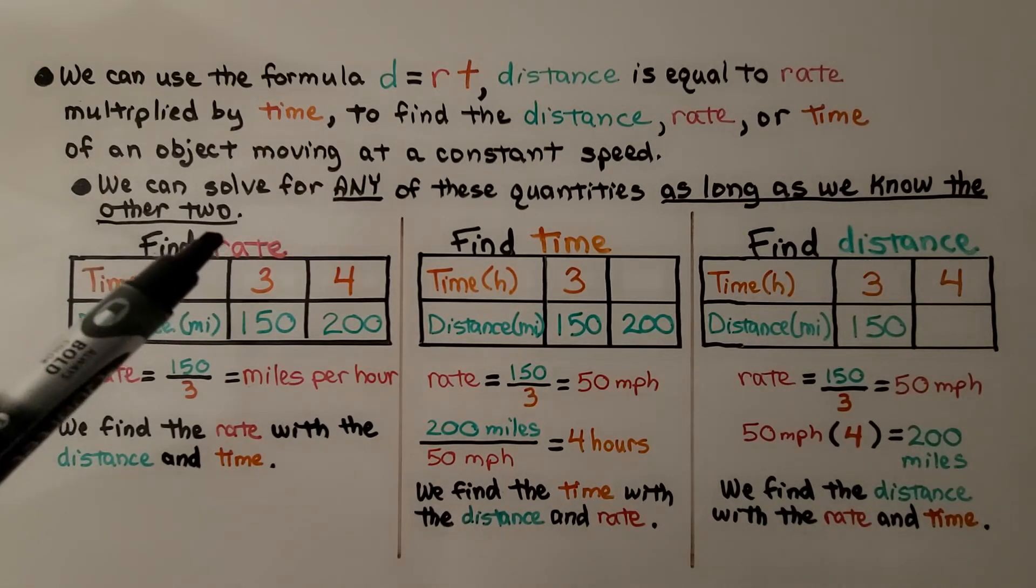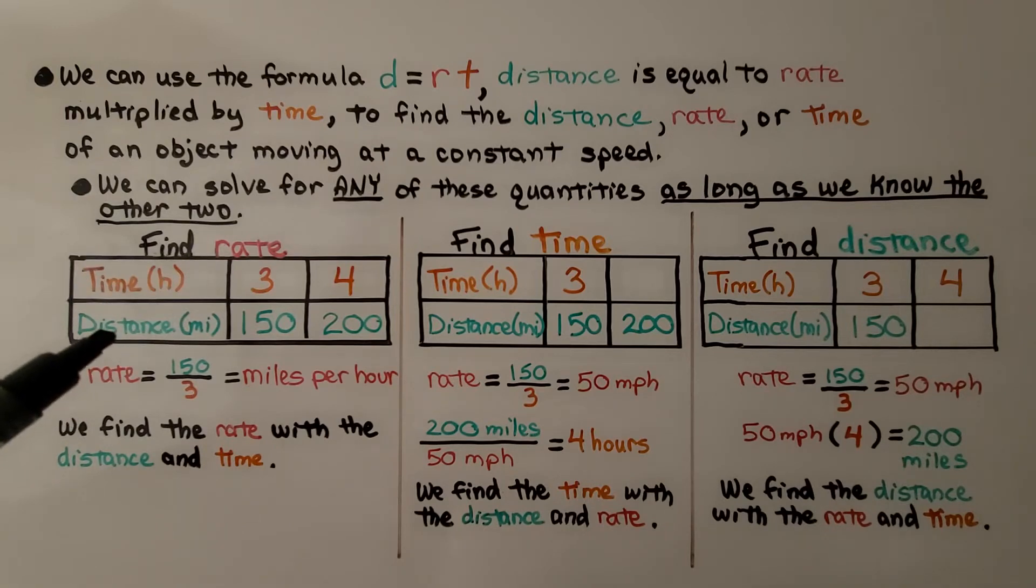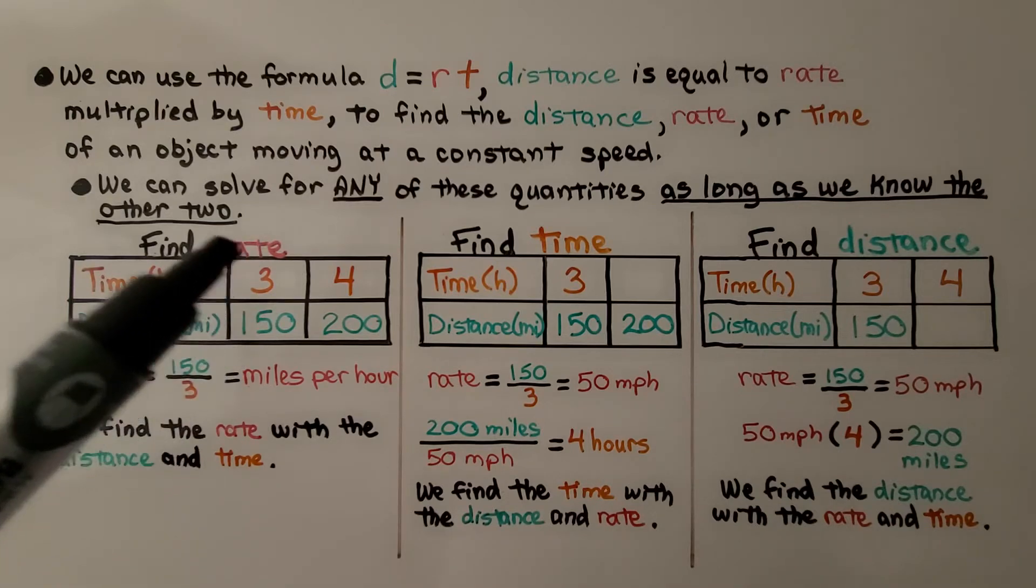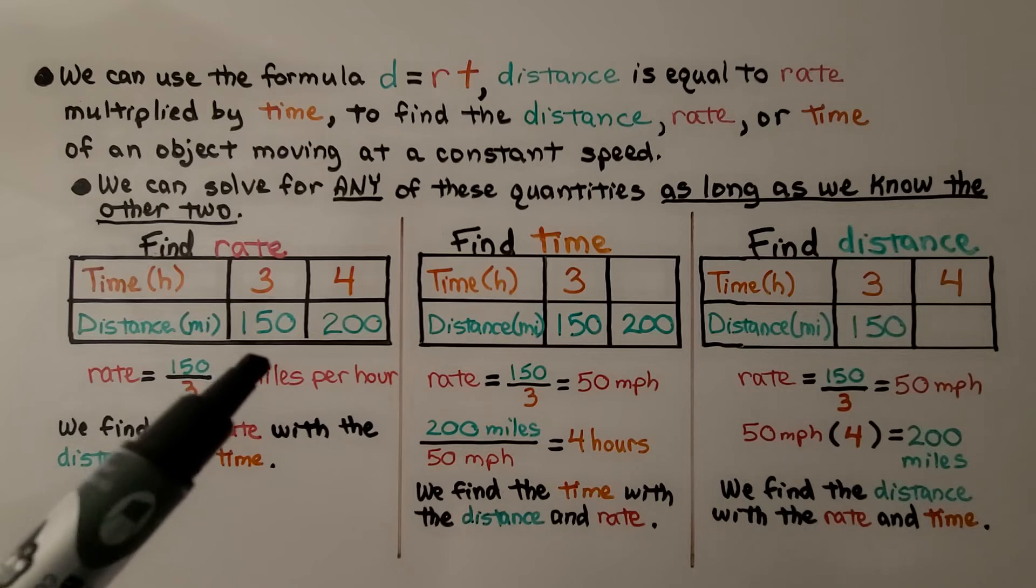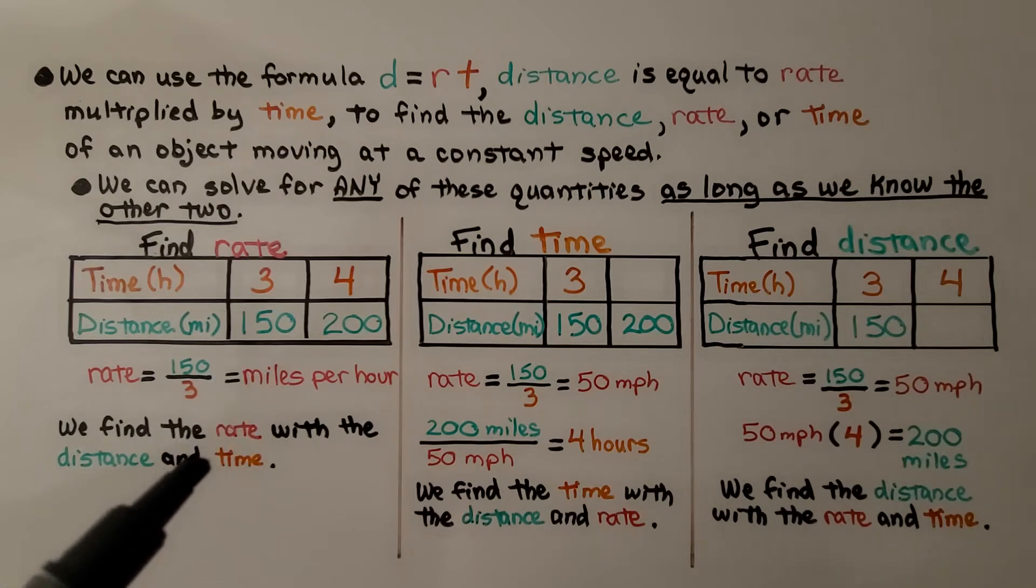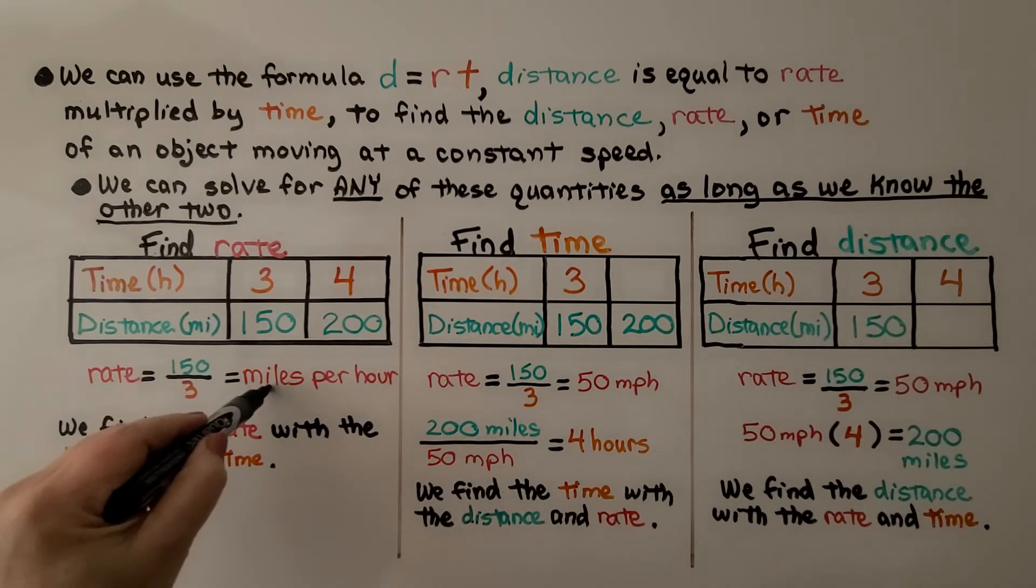If we want to find the rate, and we have the time and the distance, the rate is equal to the distance divided by the time. That'll tell us the rate, the miles per hour. We find the rate with the distance and time. So, we know that that would be 50, wouldn't it? The rate would be 50 miles per hour.